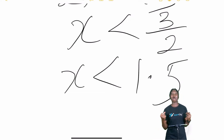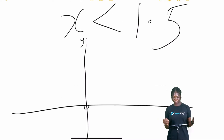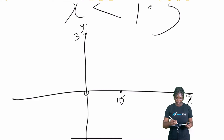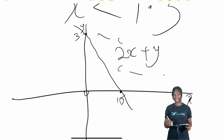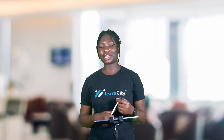We draw our graph to find the shaded region. Where y is 0, our x is 1.5, and where x is 0, our y is 3. We draw the boundary line through these intercepts, and the shaded region below the line represents our solution set for 2x plus y less than 3. That is our solution set, and this brings us to the end of our class on solution sets of inequalities of two variables. I'll see you in the next class. Thank you.